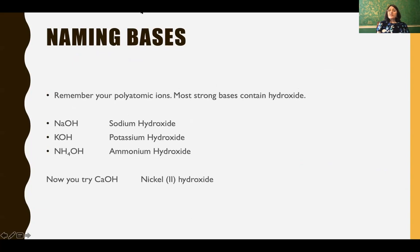To name bases, it's very simple because most strong bases contain hydroxide. So you would just name the cation and the anion. We have sodium hydroxide, potassium hydroxide, and so on. We would do more examples, more unique examples on the board.